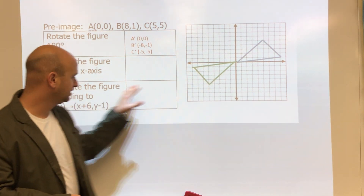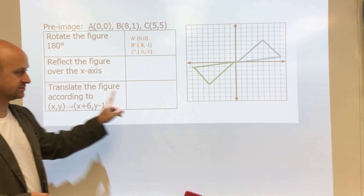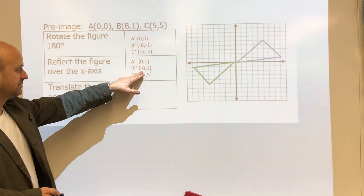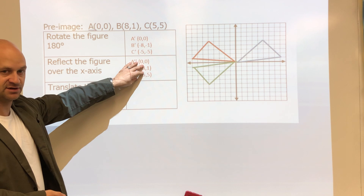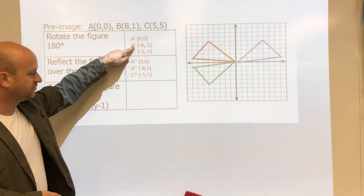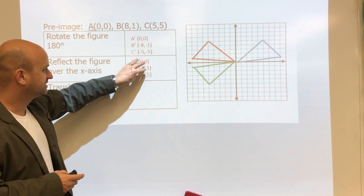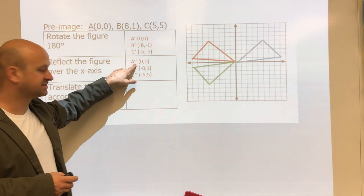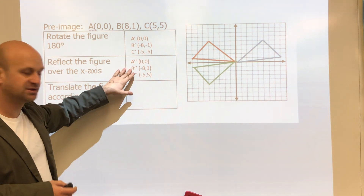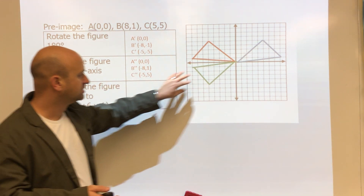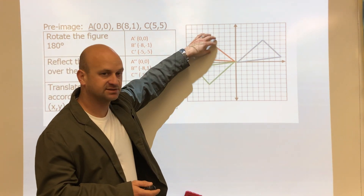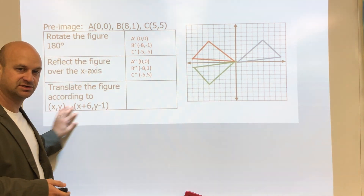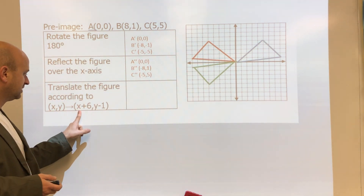That gives us the rotation of 180 degrees. Then we take the green triangle and reflect it over the x-axis, which reflects it upward. Because we've already done one image, the second image is called double prime — so A double prime, B double prime, and C double prime. When we reflect over the x-axis we end up above it.